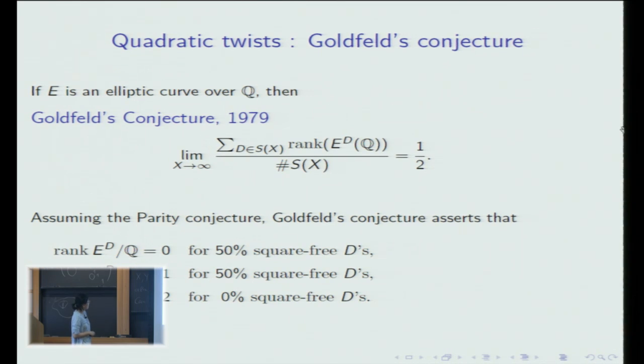Let E be an elliptic curve over Q. In 1979 Goldfeld conjectured that the average rank of quadratic twists is one half. Assuming the parity conjecture, Goldfeld conjecture predicts that half of quadratic twists have rank 0 and about half of quadratic twists have rank 1 and 0% of quadratic twists have rank greater than 2.